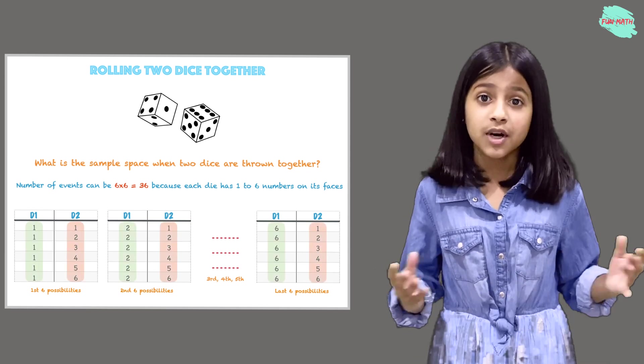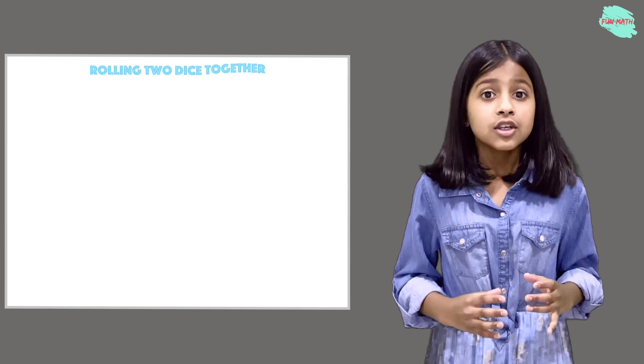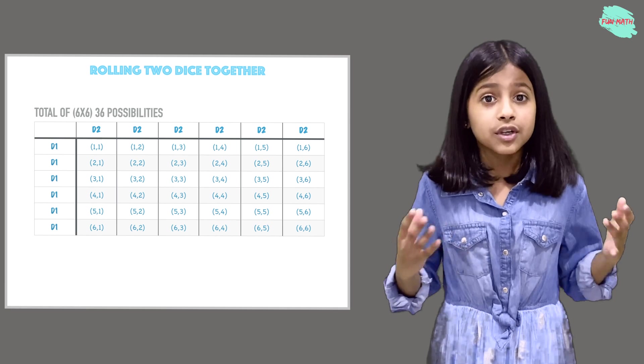These are all the possibilities we can get. So we have 36 possibilities.